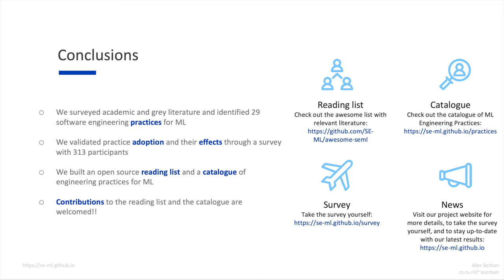In conclusion, we presented a study in which we surveyed the literature and identified 29 software engineering practices for machine learning, then validated the practice adoption and their effects through a survey with more than 300 participants. We hope that the reading list and the catalog of practices we present can help practitioners build more robust and future-proof machine learning solutions. Both the reading list and the catalog are open source and contributions are welcomed.